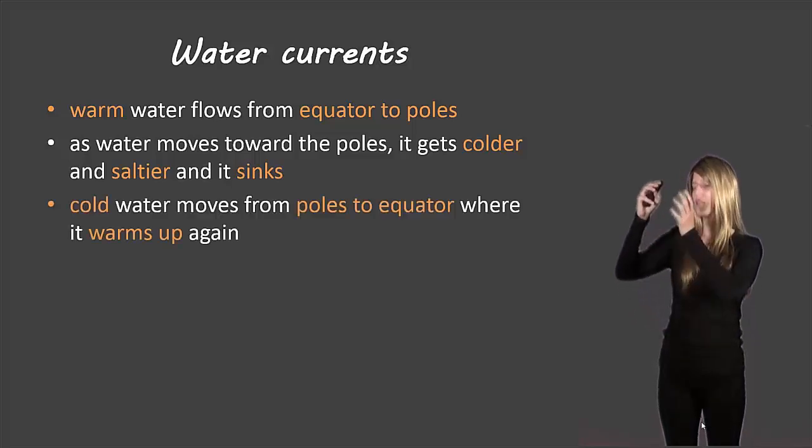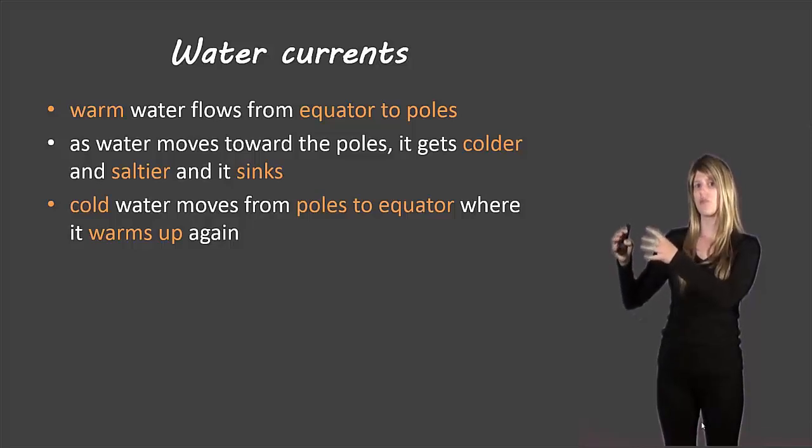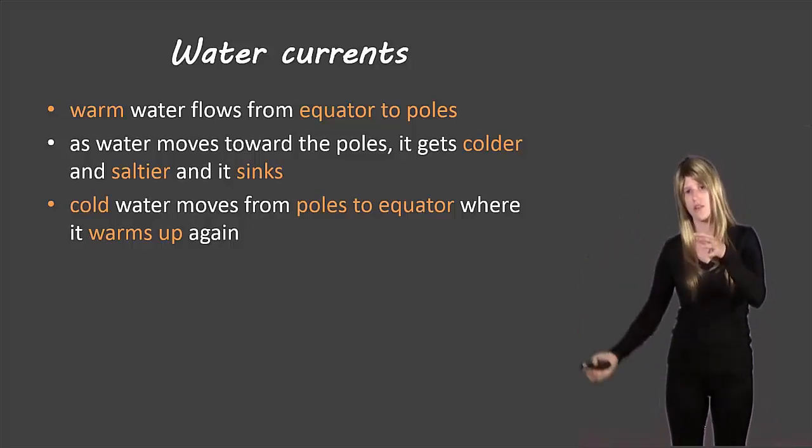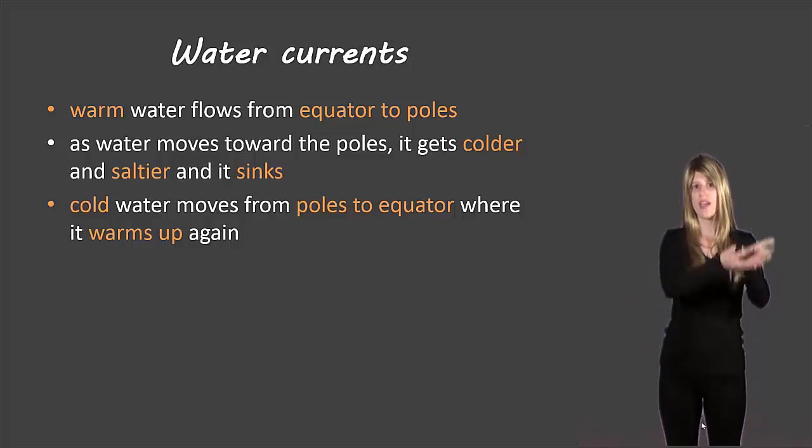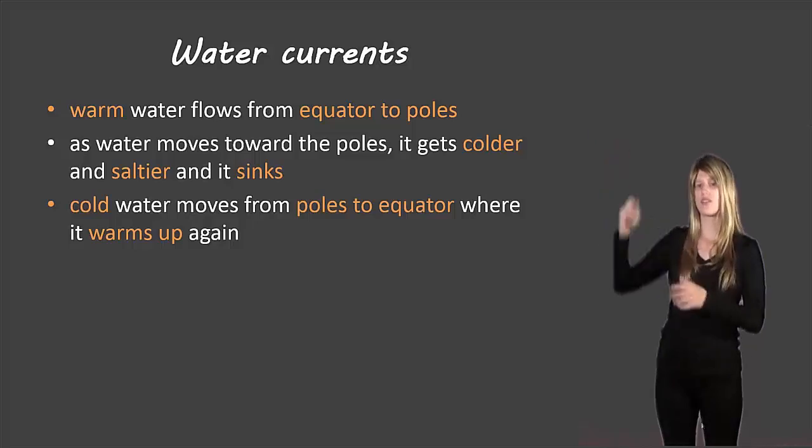So the cold water will sink. And then now it's going to move from the poles back down to the equator at a lower level because it sunk. Once it gets to the equator, it warms up again, rises, and then it'll go back towards the poles.